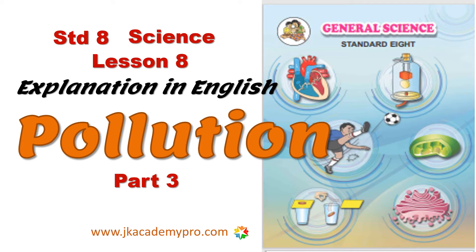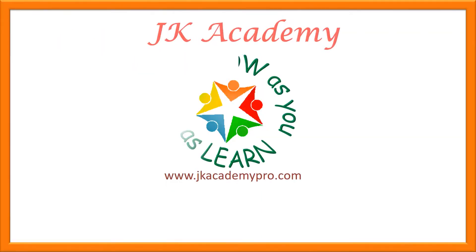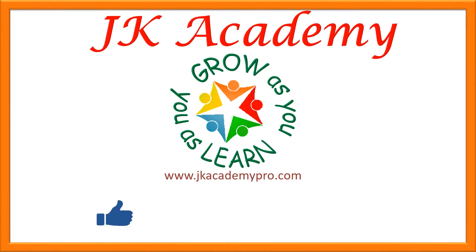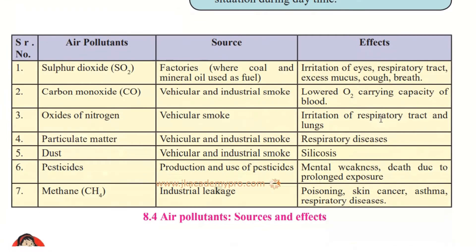Hello students, today we are doing part three from lesson eight of your science textbook for standard eight on pollution. Let's read and understand it. This video was made just for you. Now let's see the various air pollutants. Factors responsible for air pollution are called air pollutants. We will look at the source — from where it comes — and the effect of each.